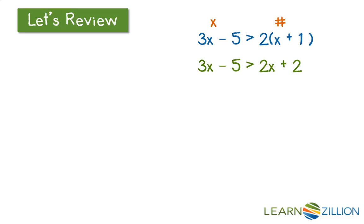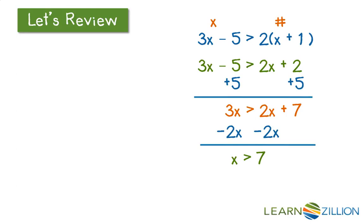Now that we have 3x - 5 > 2x + 2, we need to put all of our variables on one side and our numbers on the other. First, we add 5 to both sides because -5 and +5 are additive inverses. Then we have 3x > 2x + 7. Now we subtract 2x, and we are left with x > 7.